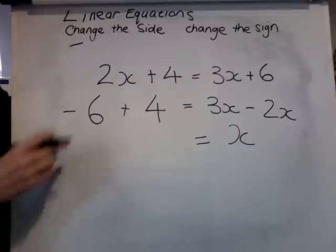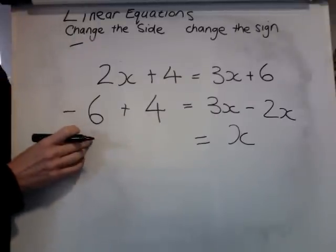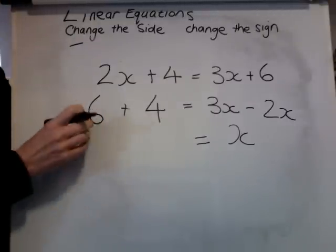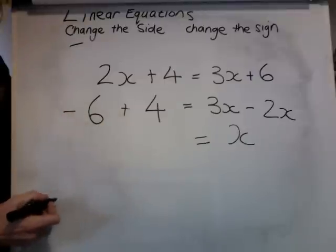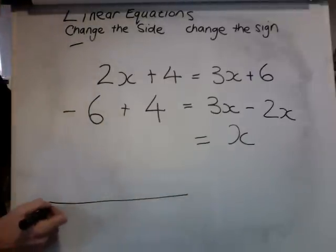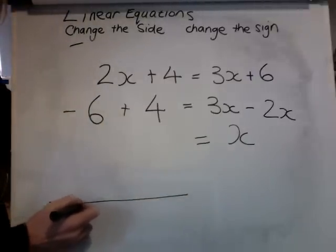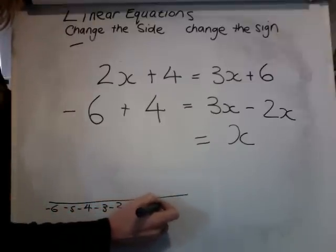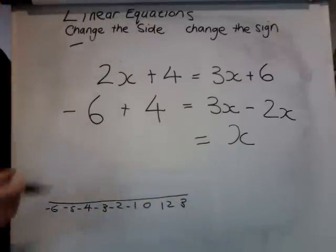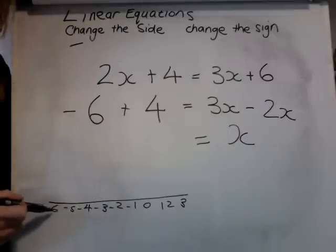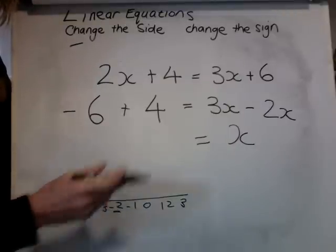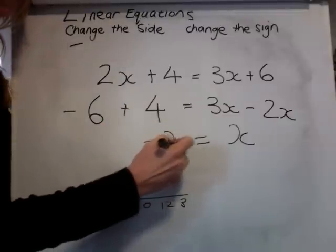And on this side we have minus 6 plus 4. So if we go from minus 6 along the number line: minus 6, minus 5, minus 4, minus 3, minus 2, minus 1, 0, 1, 2, 3. We start at minus 6 and we're going to add on 4: 1, 2, 3, 4. And the answer is minus 2.